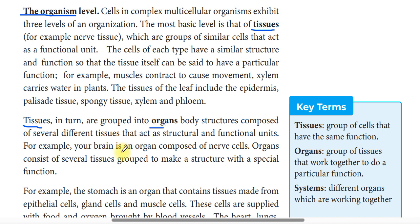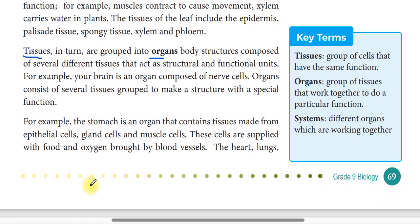For example, your brain is an organ composed of nerve cells. Organs consist of several tissues grouped together to make a structure with a special function. For example, the stomach is an organ; it contains tissues made from glands and muscles.